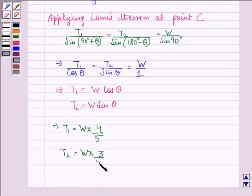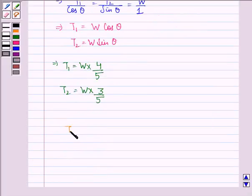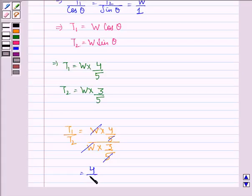Now dividing this by this we have T1 upon T2 will be equal to W into 4 upon 5 divided by W into 3 upon 5. W gets cancelled, 5 gets cancelled, we have 4 upon 3.